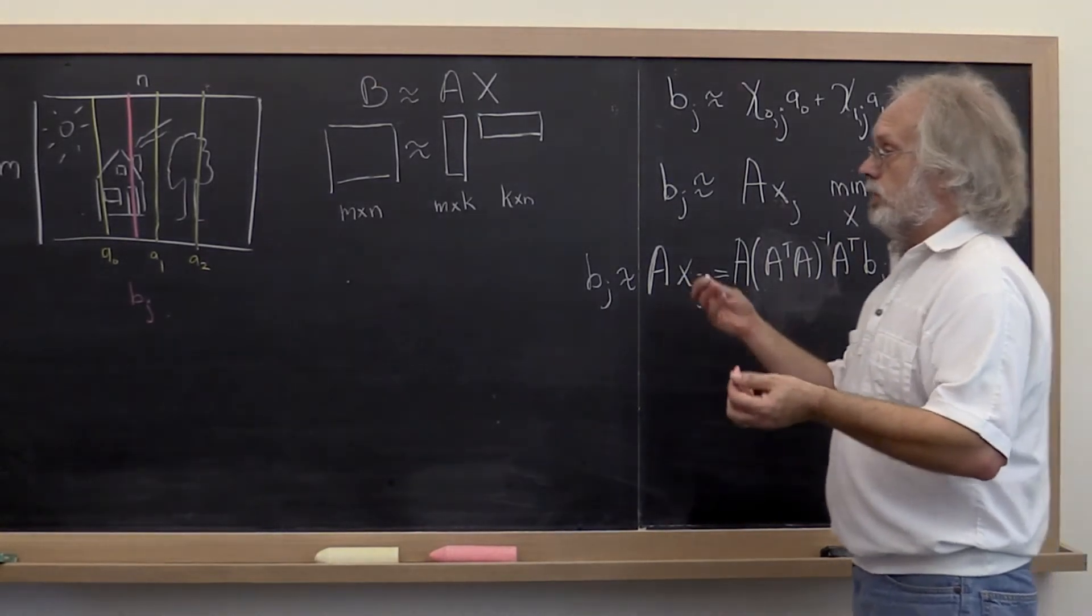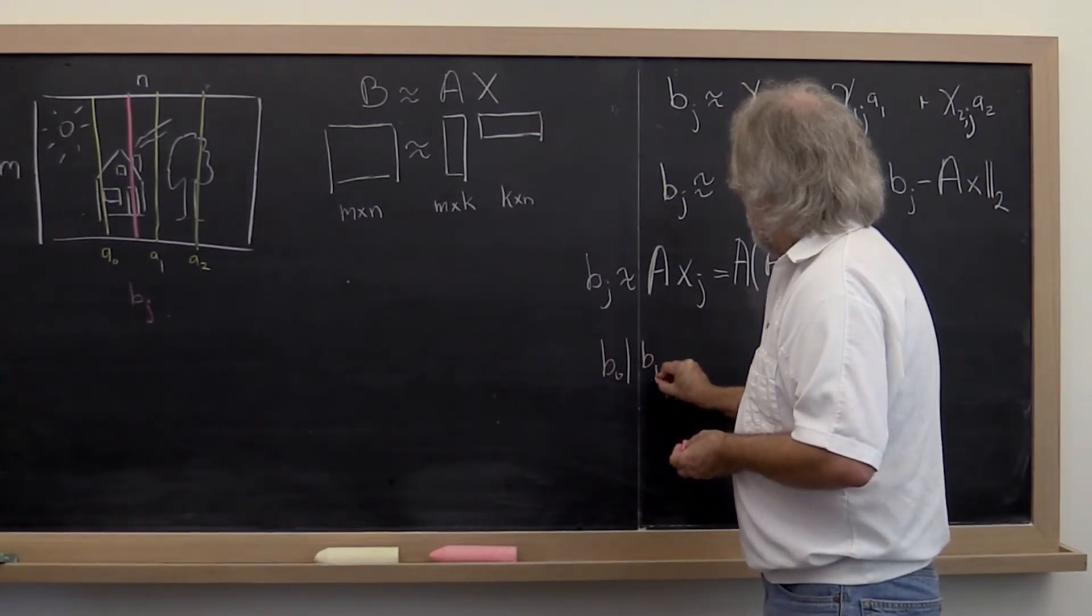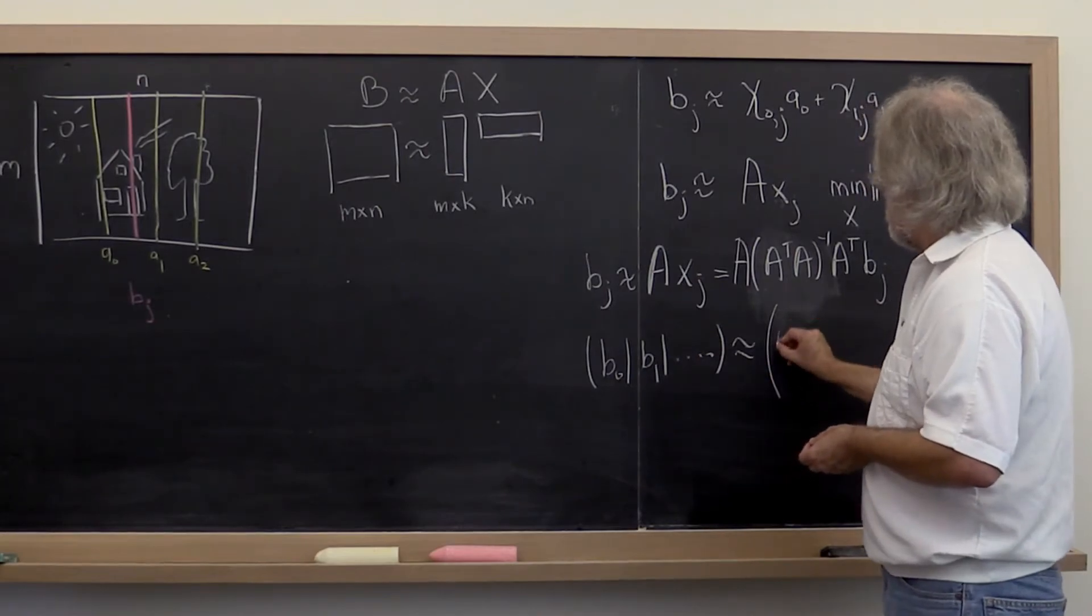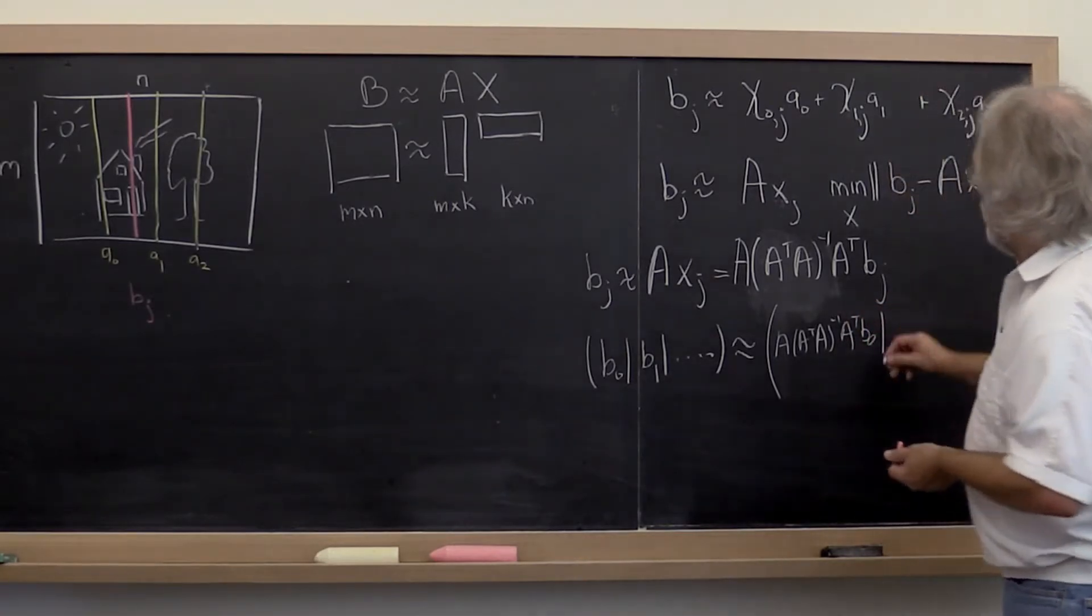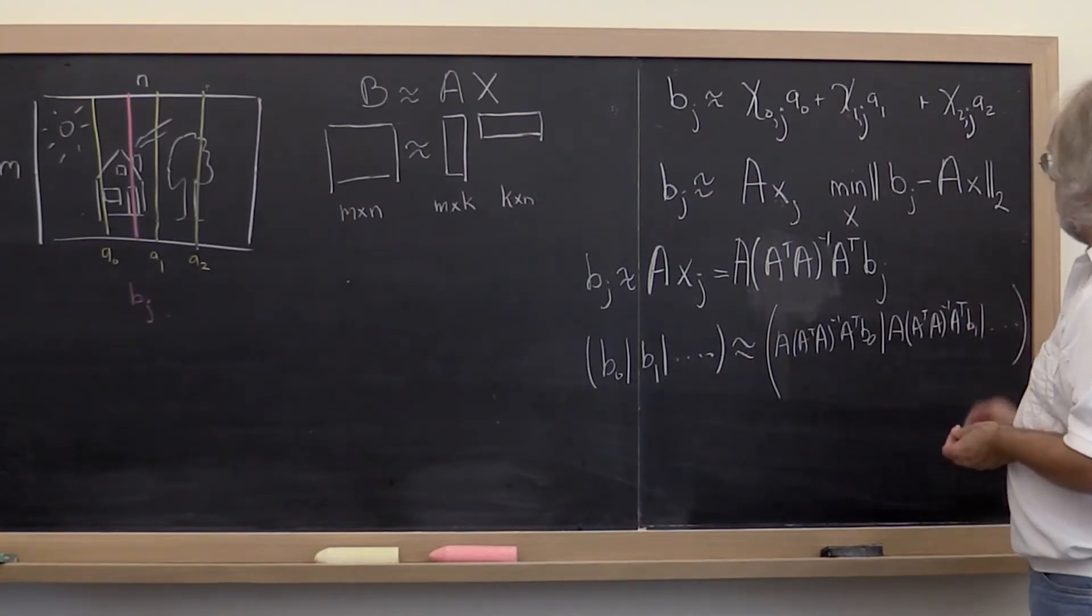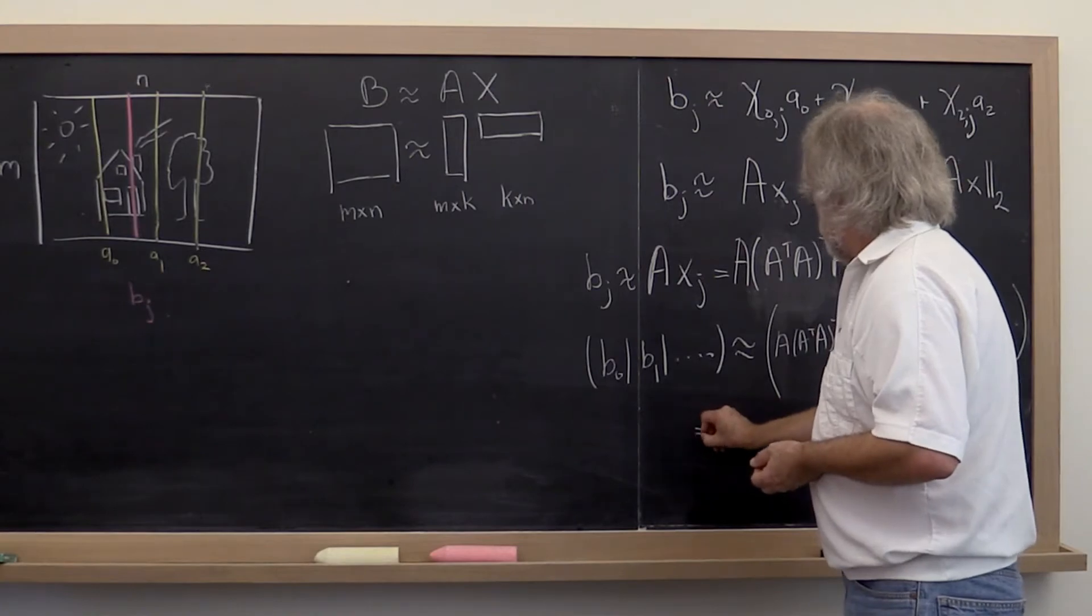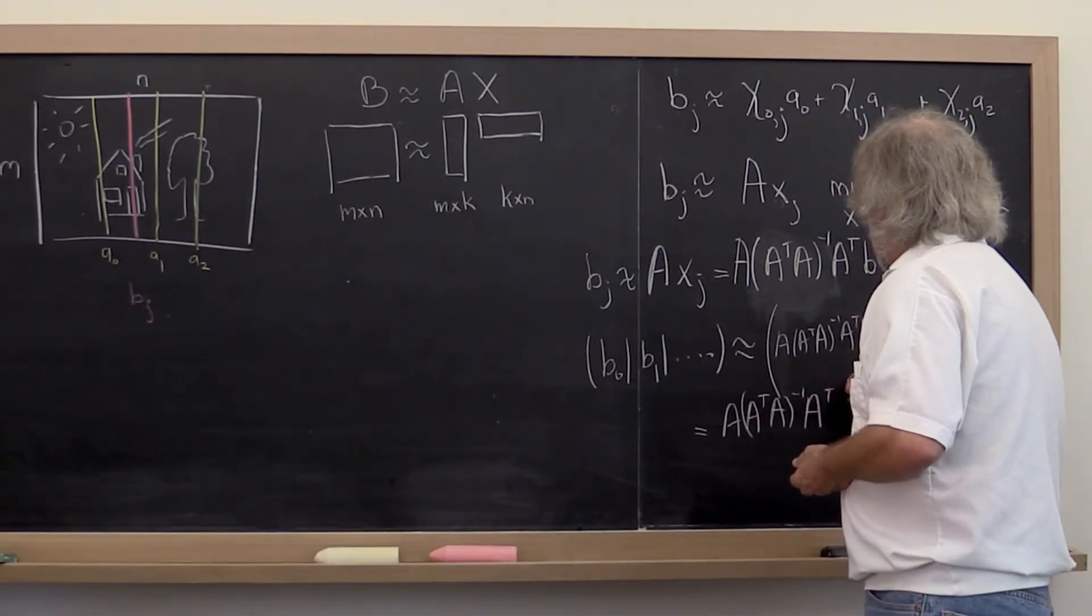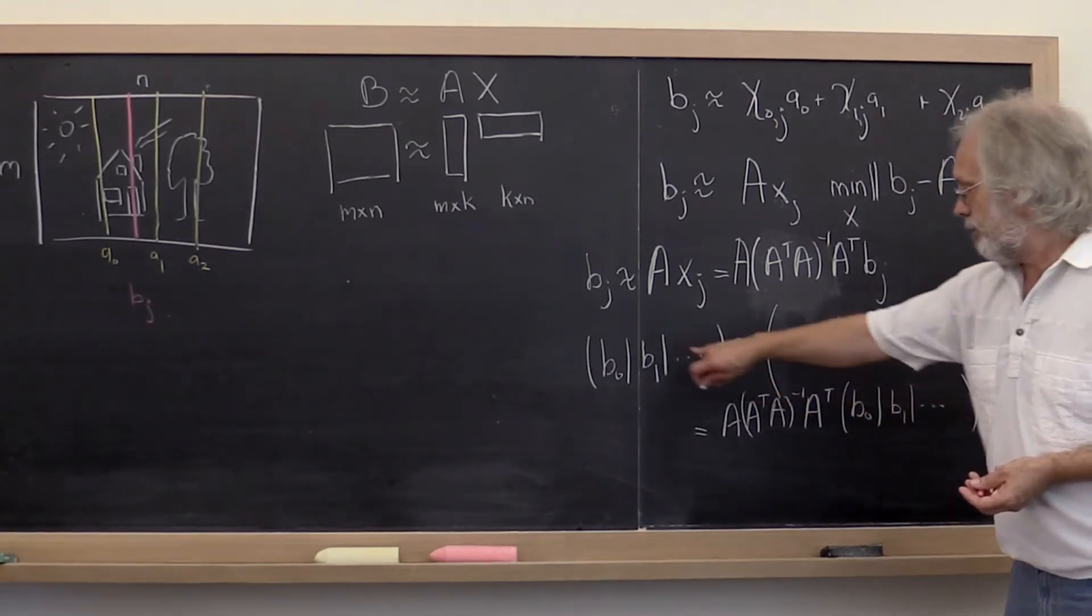Now what if we do that for all of our columns in our picture? Then we would say, B0, B1, and so forth, is approximately equal to, let's see, the first column would be approximated by A times A transpose A inverse A transpose B0. The second column would be approximated by A times A transpose A inverse A transpose B1, and so forth. And you should recognize the fact that we can then bring this matrix, and this is actually equal to A times A transpose A inverse A transpose times B0, B1, and so forth.